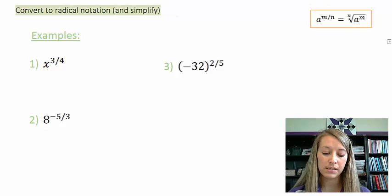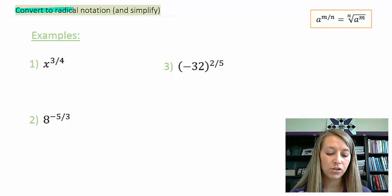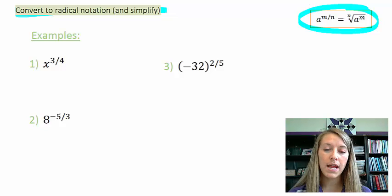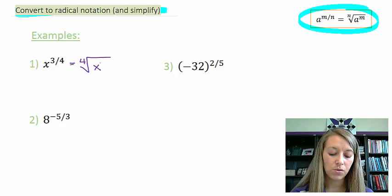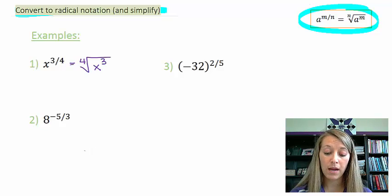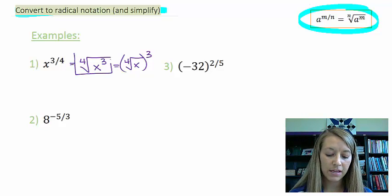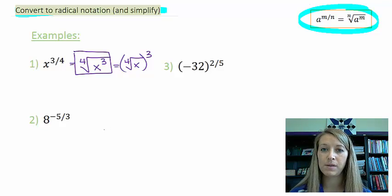The first set of examples: the instructions say to convert to radical notation and if possible simplify. The property is listed for reference. Example one: x to the 3 fourths. The denominator 4 converts to the root, and x to the third power stays as the power. I can write it as the fourth root of x cubed, or as the root first and the power last — whichever is easier. I'll write it with the power inside most of the time since it saves a set of parentheses.